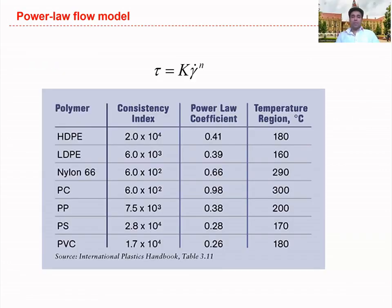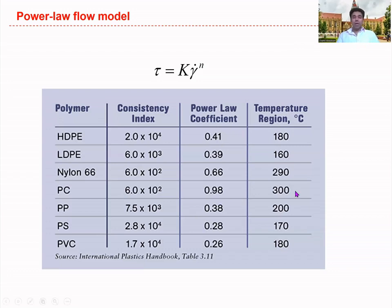You should be familiar with the power law parameters: k is the consistency index and n is the power law index. These parameters depend on the polymer type and processing temperature. For example, for high-density polyethylene processed at 180 degrees Celsius, specific K and N values apply. Likewise, for different materials such as LDPE, we can identify K and N values at different temperatures, so you must find these values from data sheets using the correct processing temperature.